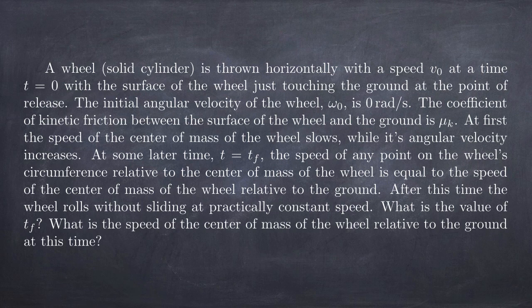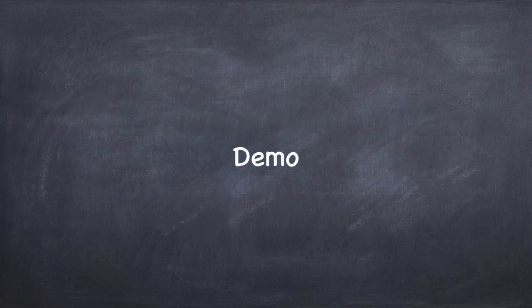At some point, the speed of the wheel's rotation matches the speed of the center of mass motion, and from that point forward the wheel rolls without sliding. You've probably seen this if you've ever been bowling — when you first release the bowling ball, it slides down the alley and slowly picks up rotational speed until the angular velocity and the translational motion sync up. The question this problem is asking is: how long does that take, and what is the final speed of the center of mass at that time?